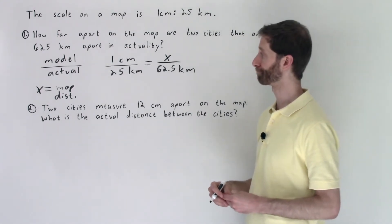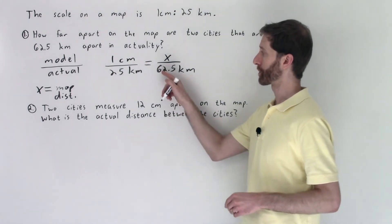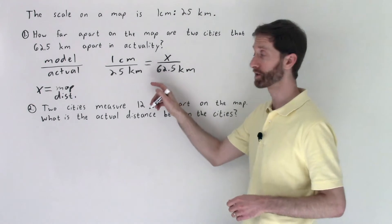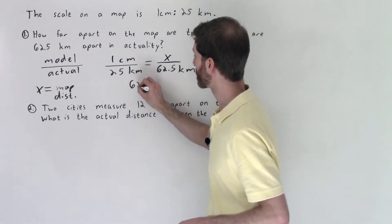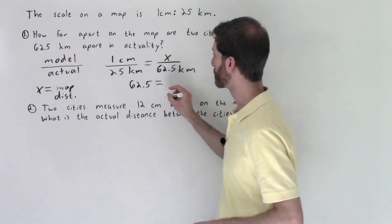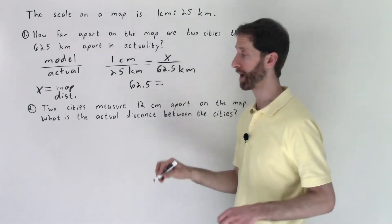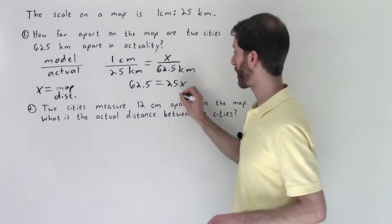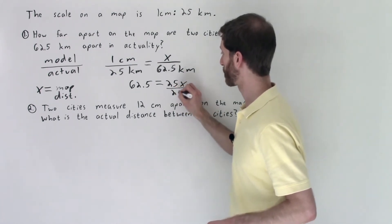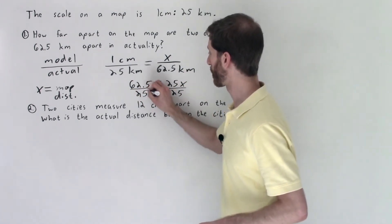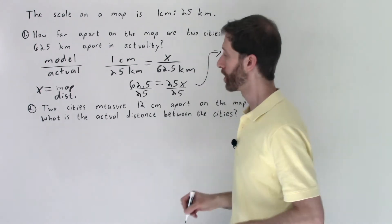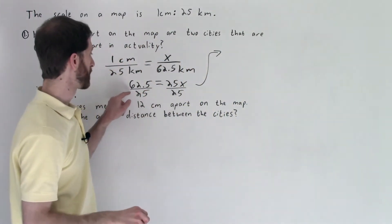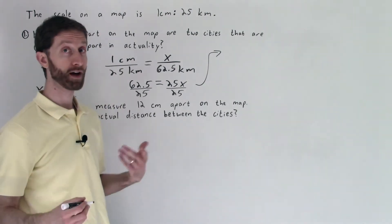Now we've got ourselves a proportion and all we have to do is solve that proportion. Next we cross multiply, nothing to simplify on either side. So I'm going to multiply one by 62.5, that gives me 62.5 is equal to x times 25, 25x. Now to undo 25 times x we divide both sides by 25.